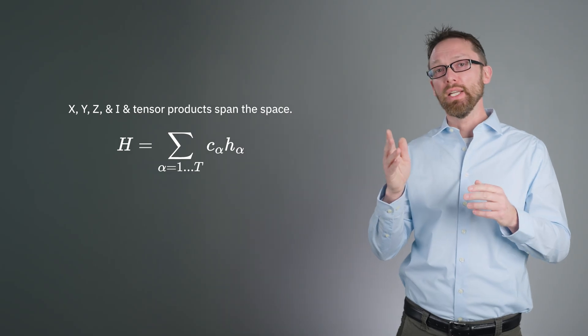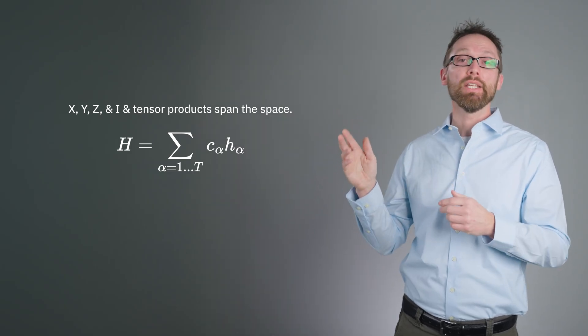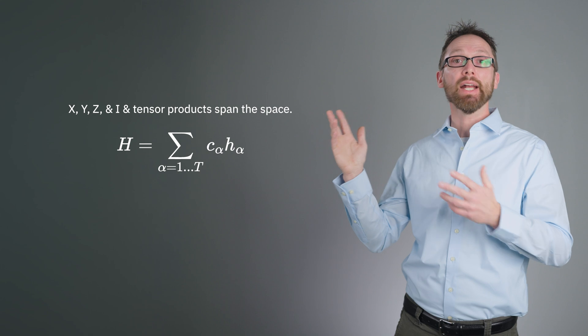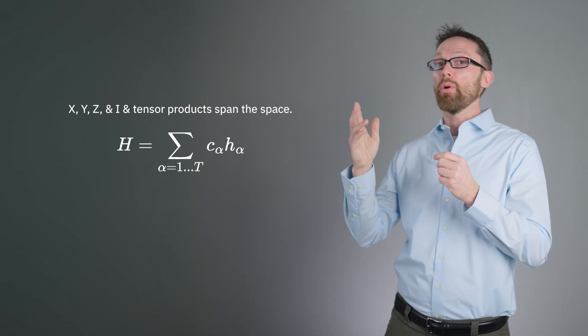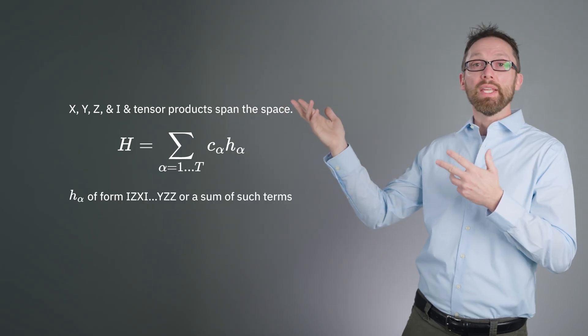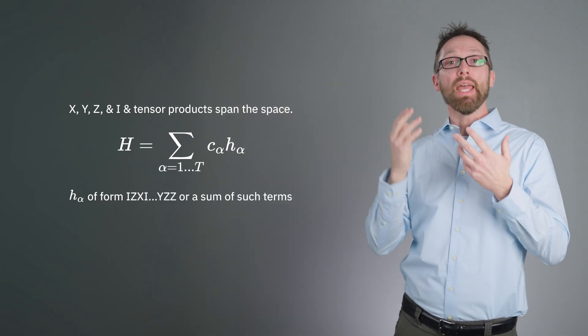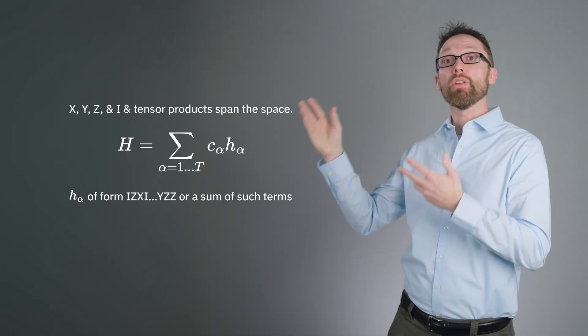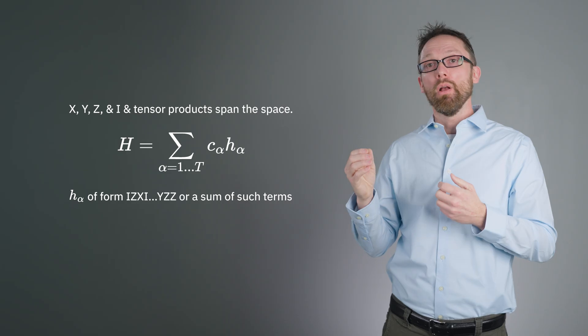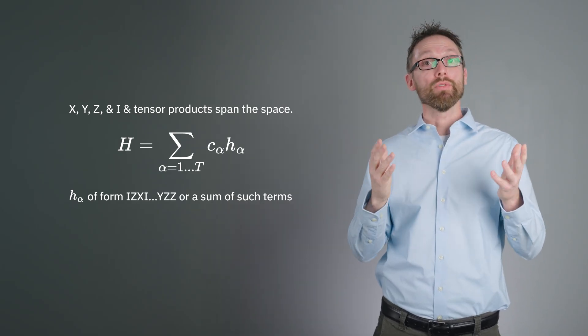Because Pauli matrices, plus the identity, span the space of all operators of a given dimension, we are guaranteed that we can write our matrix of interest as a weighted sum of Pauli operators, as we did before. Here, c_α is a numerical coefficient and H_α is a string of Pauli operators acting on all the qubits describing your system. H_α would have a form like this, where the nth Pauli operator from the right acts on the nth qubit. So we can measure our operator by measuring a series of Pauli operators. But we cannot measure all of those Pauli operators simultaneously. Pauli operators, excluding the identity, do not commute with each other if they are associated with the same qubit.